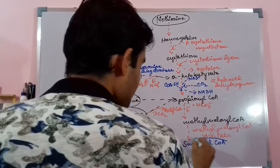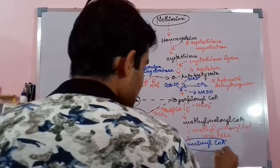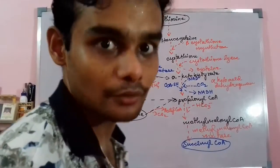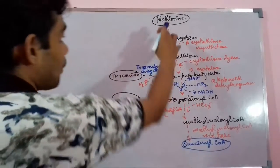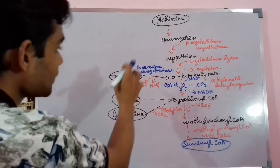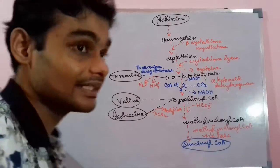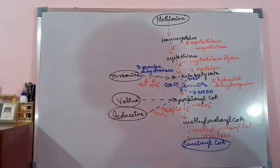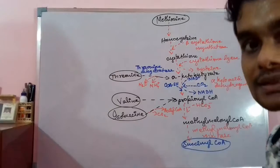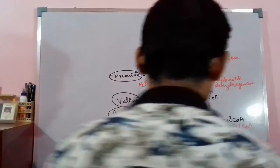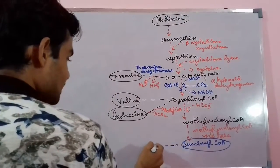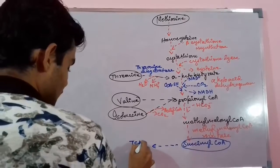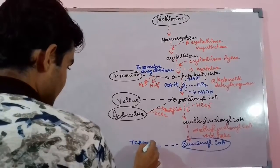This succinyl CoA is the ultimate end product of all four amino acids: methionine, threonine, valine, and isoleucine. Succinyl CoA directly takes part in the TCA cycle.